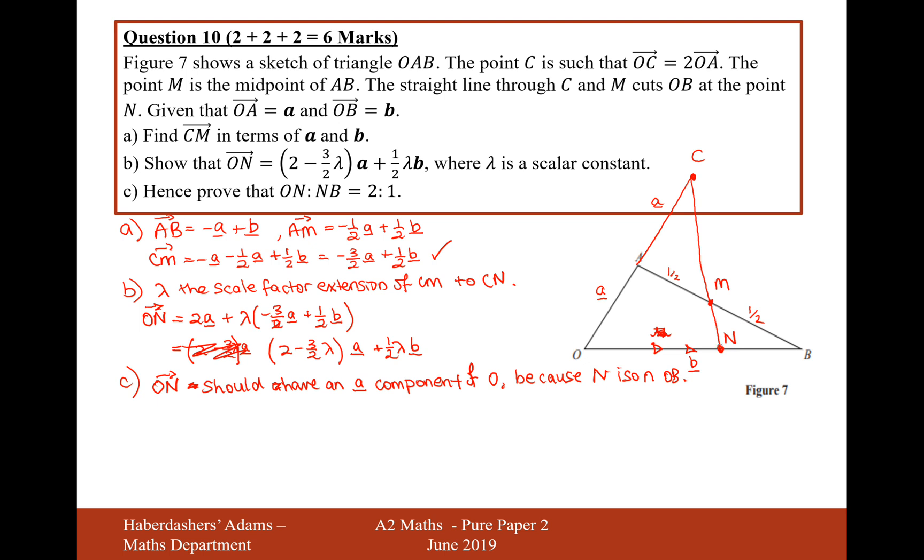So from O to N should have an a component of zero because N is on OB. It should just be some fraction of the vector b. So therefore, two minus three over two lambda should just equal zero. So therefore, two equals three over two lambda. So therefore, lambda is four thirds. So lambda is four thirds.